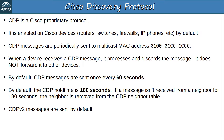CDP version 2 messages are sent by default. There are two versions of CDP — version 1 and version 2 — but version 2 is used by default. CDP version 1 is very old so you'll probably never need to use it. You don't need to know the differences between version 1 and version 2, but basically version 2 provides a few more advanced features like the ability to identify native VLAN mismatches. Let's get right into the CLI to see exactly what information is shared by CDP.